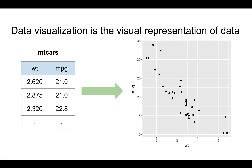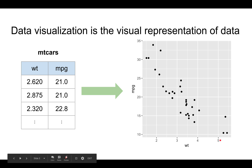Data visualization is about a visual representation of data. For example, you might have some weights and miles per gallon of cars, and you can plot them on a graph. And once you look at the graph, it's very clear that cars which are heavier tend to have worse miles per gallon.